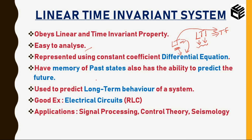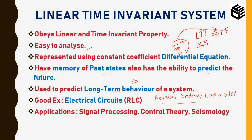Other properties of an LTI system include that it contains past state values — it has memory of past states — making it easy to predict the future behavior of the system. Based on this memory and prediction we can draw conclusions about the periodicity and long-term or short-term behavior of a system. Good examples of LTI systems are electrical circuits with basic components: resistor, inductor, and capacitor (RLC). Applications of LTI systems include signal processing, control theory, and seismology.